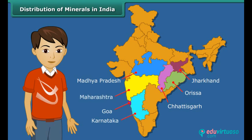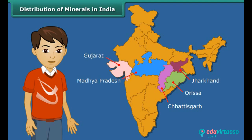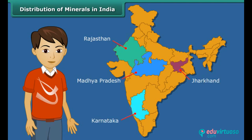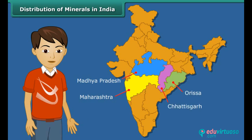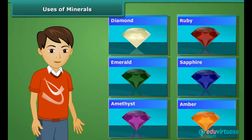Major bauxite producing areas are Jharkhand, Odisha, Chhattisgarh, Madhya Pradesh, Gujarat, Maharashtra, and Tamil Nadu. Copper is mainly produced in Rajasthan, Madhya Pradesh, Jharkhand, Karnataka, and Andhra Pradesh. Manganese is mainly found in Maharashtra, Madhya Pradesh, Chhattisgarh, Odisha, Karnataka, and Andhra Pradesh. Kolar in Karnataka has deposits of gold in India.